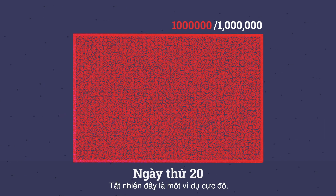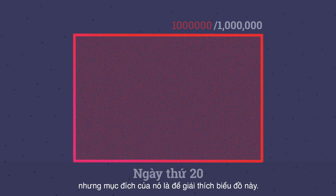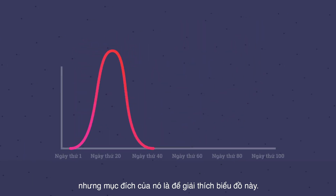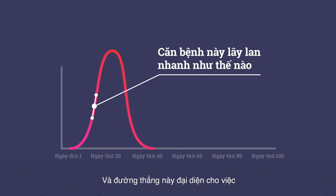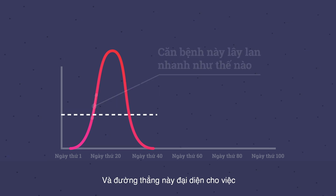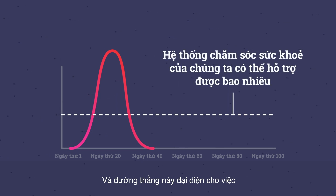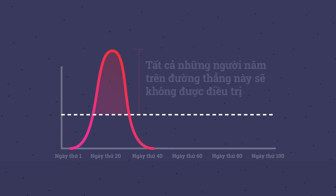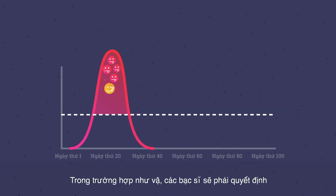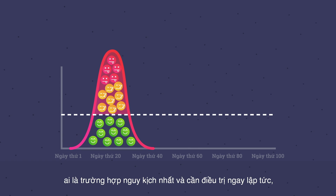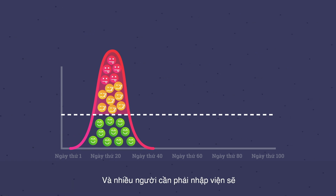Now this is an extreme example, but the purpose of it is to explain this curve. These curves represent how quickly the disease is spread. And this line here represents how much our healthcare system can assist. Everyone above this line is left outside without care. In situations like this, doctors have to determine who is the most critical and needs immediate treatment, and many people who need to be hospitalized will be left without care.